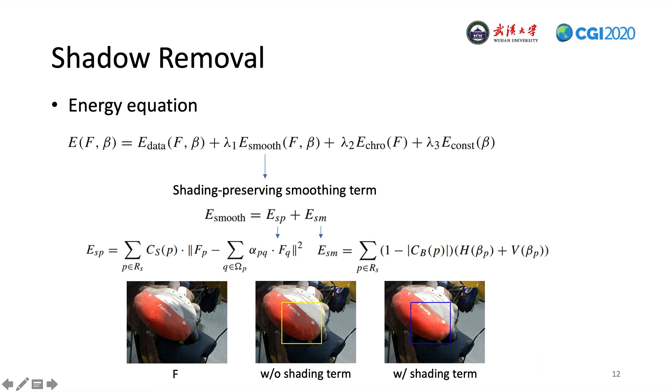Then, we also define a shadow boundary-aware smoothness constraint on beta. We adopt the relative total variation for producing smooth beta. The results without and with shading-preserving smoothing term are as follows. The shading of the shadow region is better reconstructed.